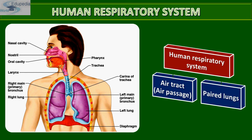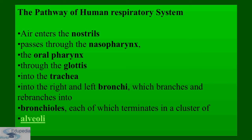The outer pleural membrane is in close contact with the thoracic lining, whereas the inner pleural membrane is in contact with the lung surface. The pathway of the human respiratory system is: air enters the nostrils, passes through the nasopharynx and oral pharynx, then through the glottis into the trachea, and into the left and right bronchi, which branch and re-branch into bronchioles, each terminating in a cluster of alveoli — the air sacs.